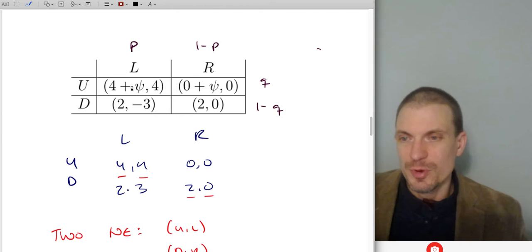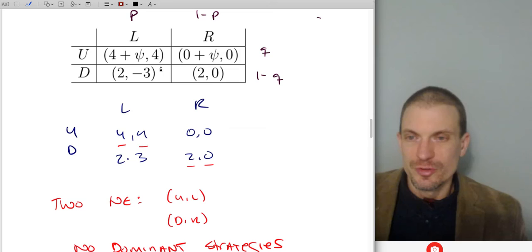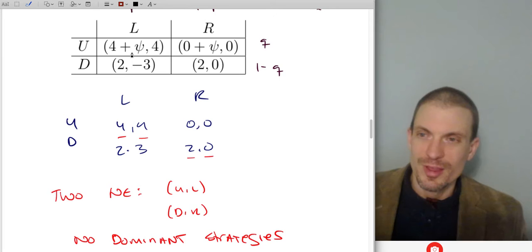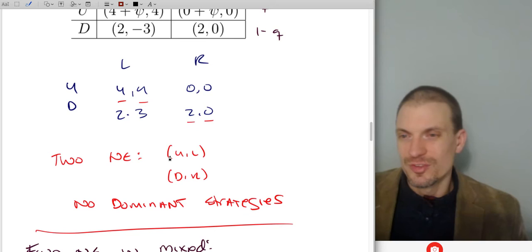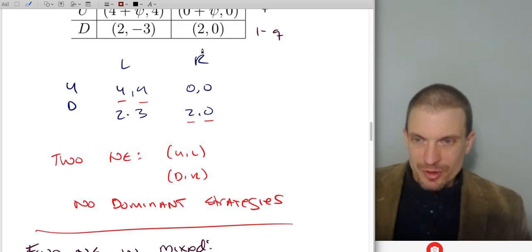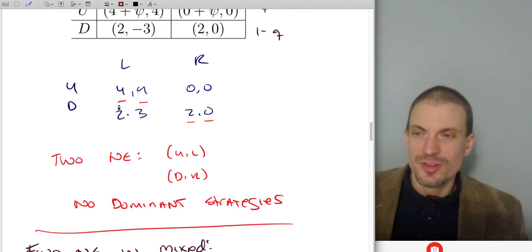With psi equal to 0, the game is 4,4 / 2,3 / 0,0 / minus 3,2 / 0,2 — let me report that as a matrix: up-left gives 4,4; up-right gives 2,0; down-left gives 0,3; down-right gives minus 3,2. Using best response: if column player chooses L, row player chooses up. If column player chooses right, row player chooses down. If row player chooses up, column player chooses left. If row player chooses down, column player chooses right. No one has a dominant strategy. However, there are two Nash equilibria in pure strategies: up-left and down-right.